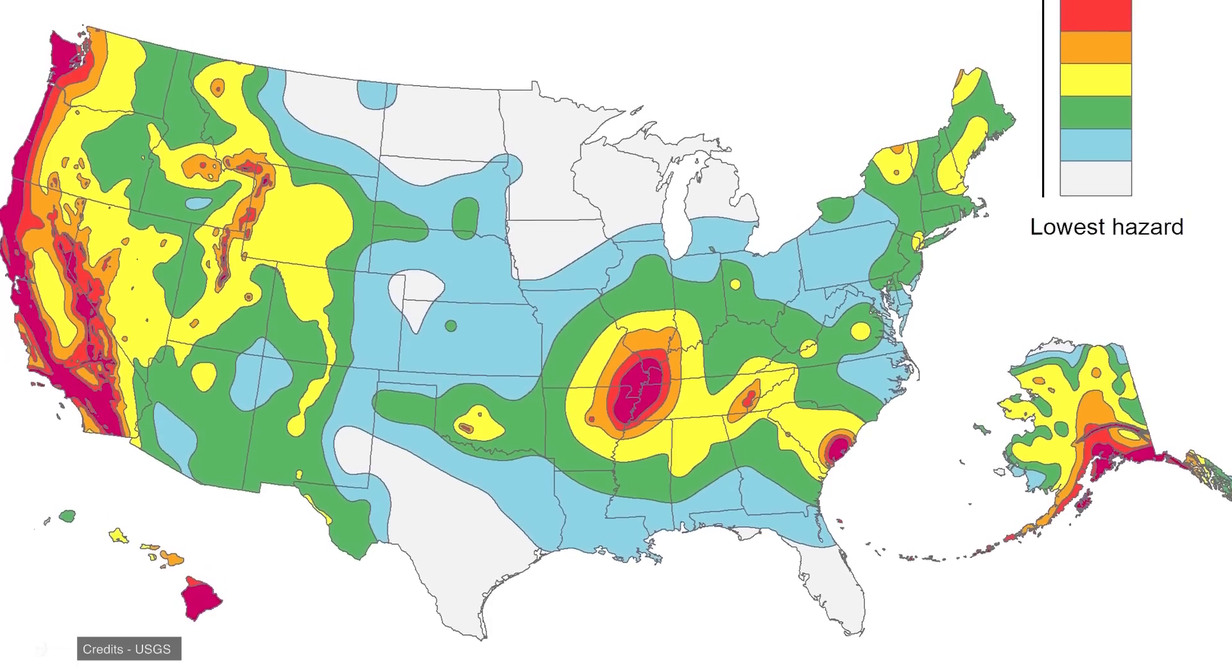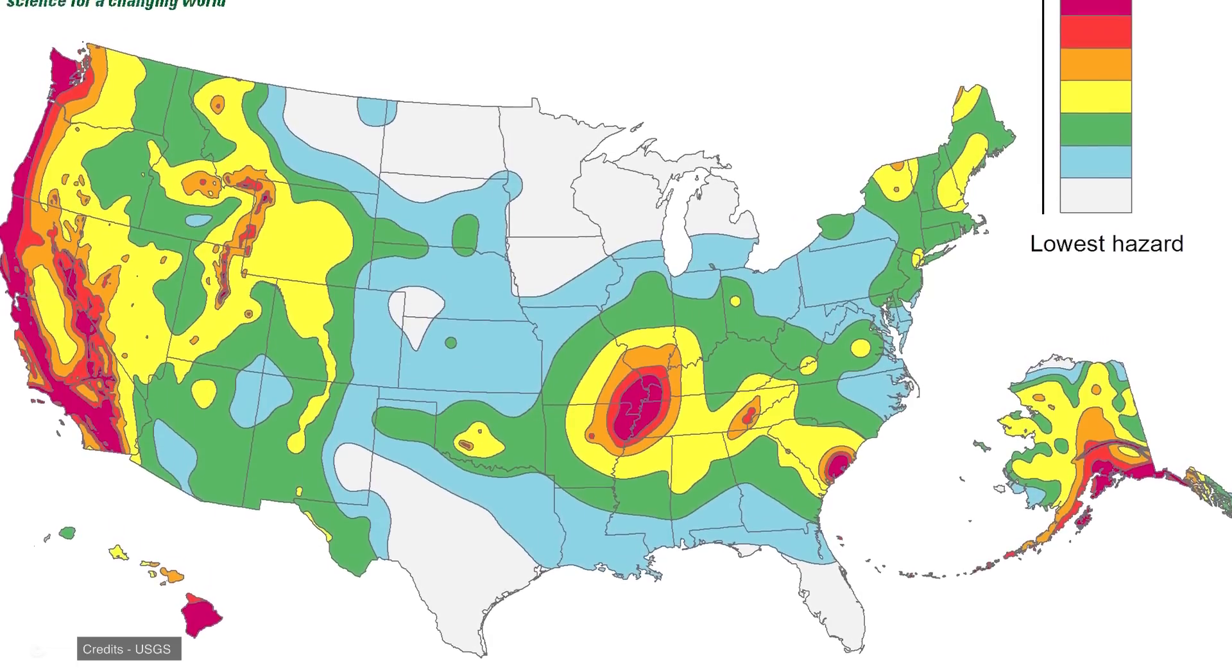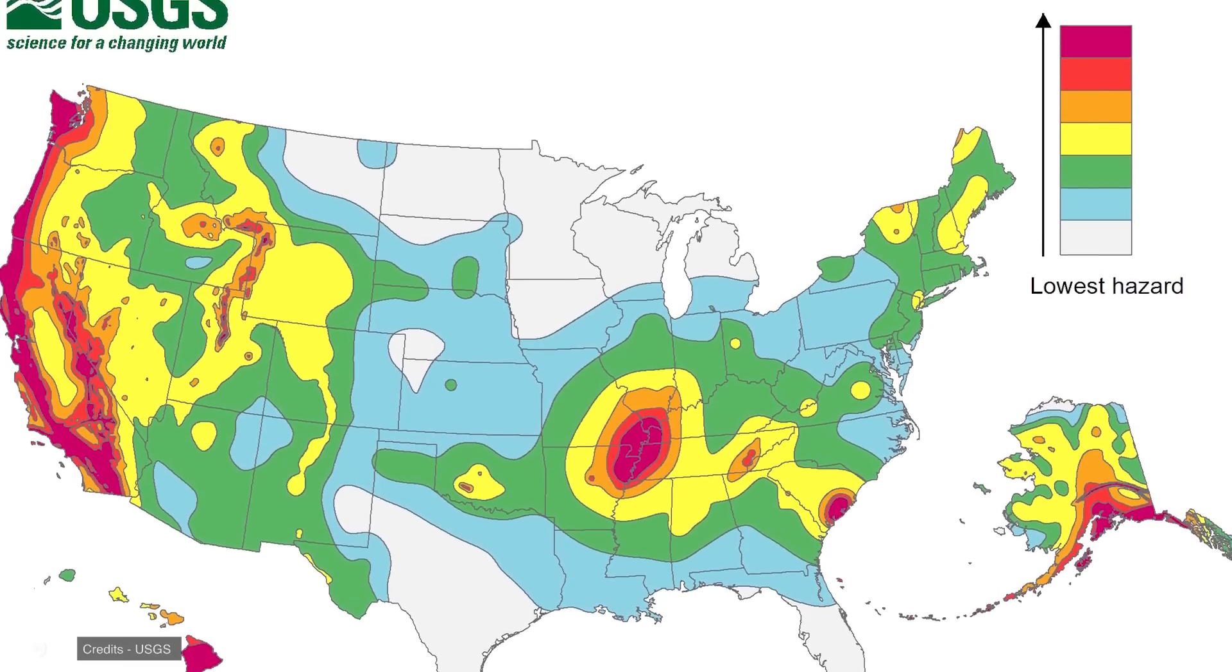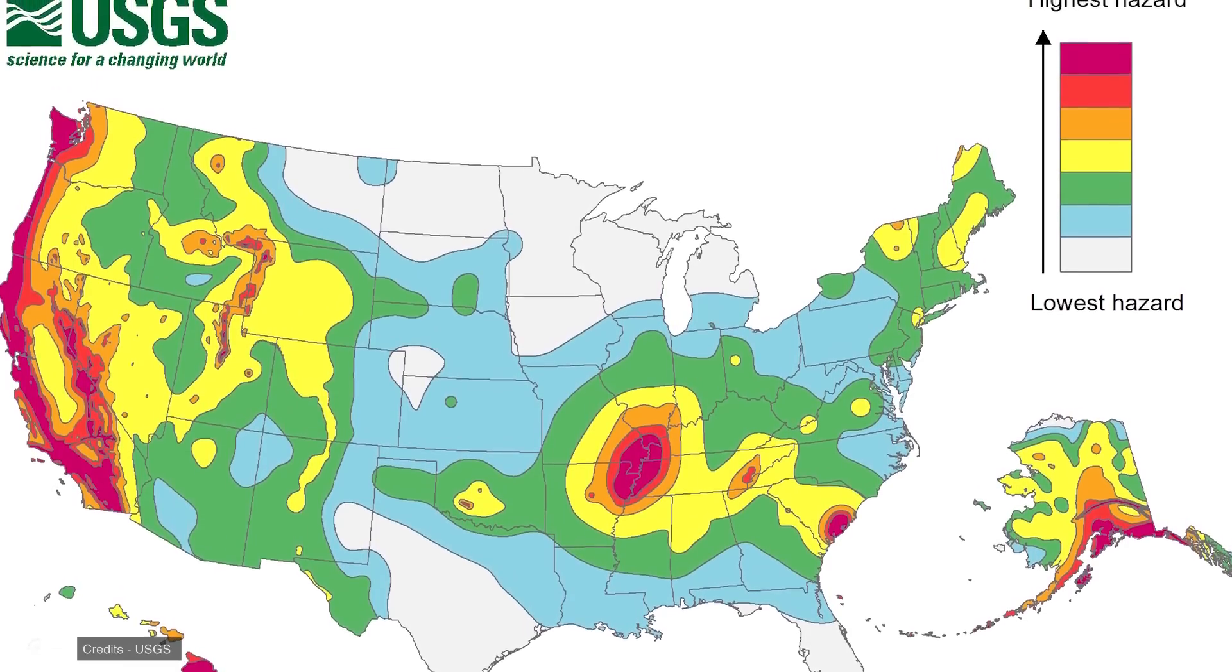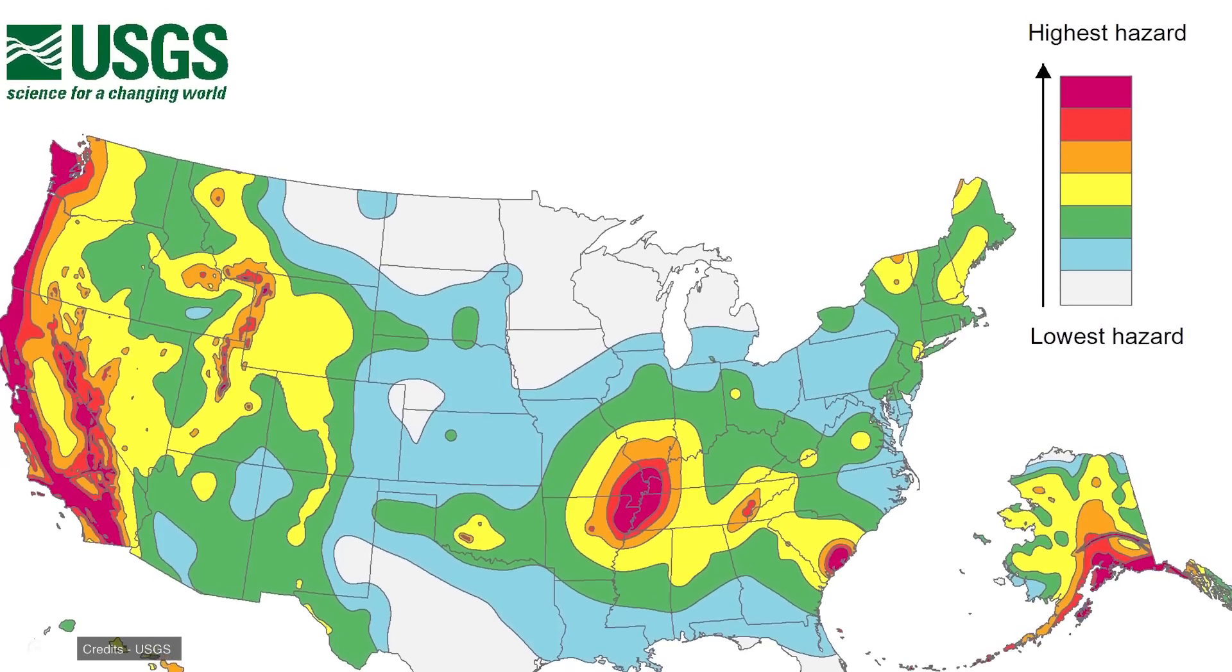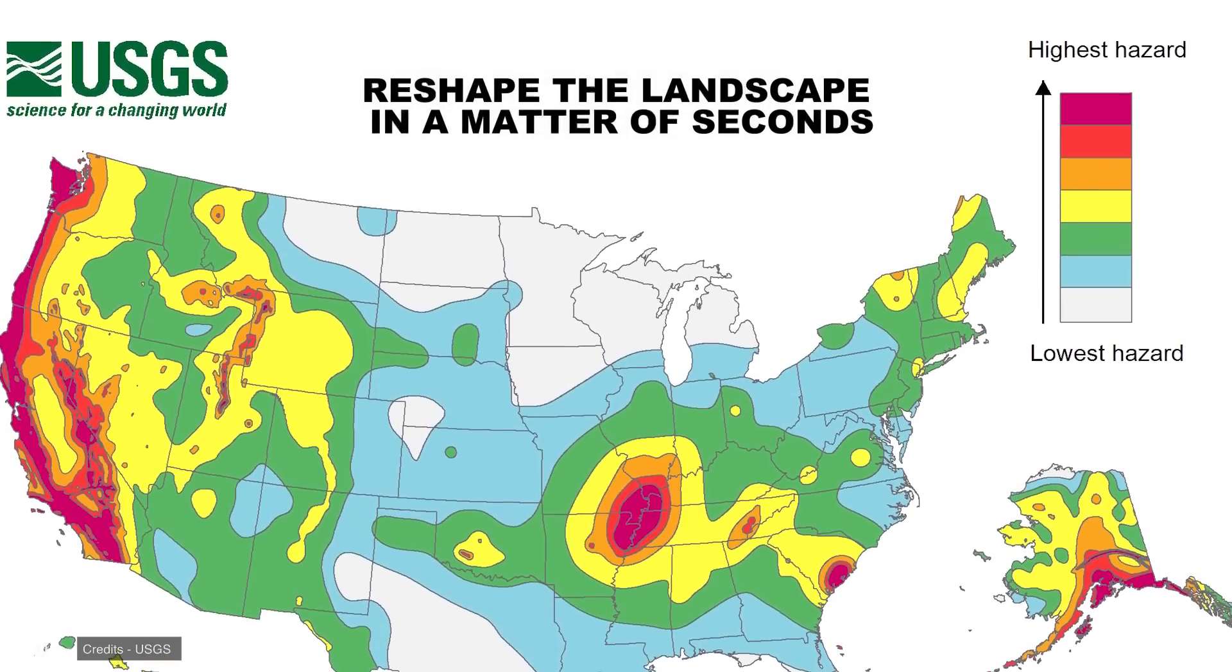From the infamous San Andreas Fault in the west to the New Madrid seismic zone in the heartland and the monstrous Cascadia subduction zone in the Pacific Northwest, the United States is overlapped by a network of active fault lines that have the power to reshape the landscape in a matter of seconds.